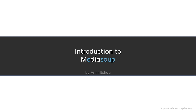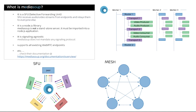So what is MediaSoup? MediaSoup is a selective forwarding unit. An SFU receives video and audio streams from endpoints and relays them to everyone else. So a peer sends a media stream and MediaSoup relays it to everyone else connected with that peer. You can see MediaSoup in the center, with this peer in blue sending media, and MediaSoup relaying that media to everyone in the connection.